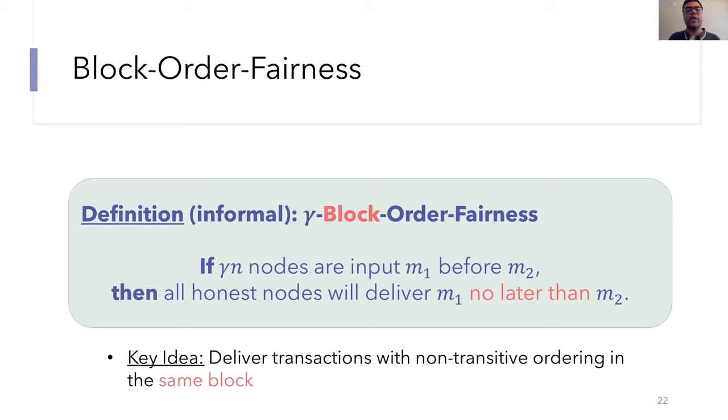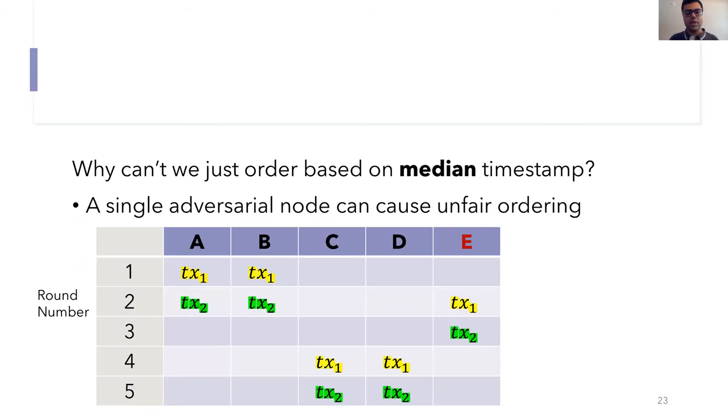So this is a small definitional change, but it's actually quite significant because it allows us to sidestep the Condorcet paradox. This is done by placing the transactions with contradictory or non-transitive orderings into the same block. An important point here is that the transactions in a block are still totally ordered. It's just that the reordering within a block is no longer considered to be unfair. So we'll use minimal use of this relaxation. Our protocols will actually achieve the stronger receive order fairness definition, except when it's actually impossible to achieve because of the Condorcet paradox.